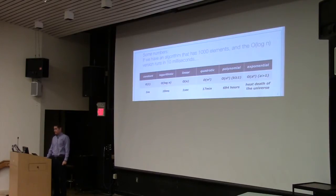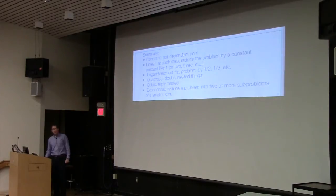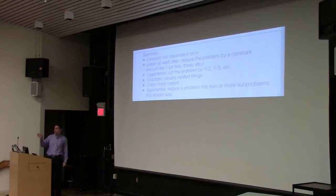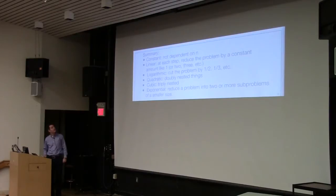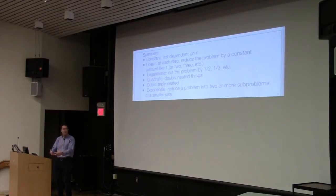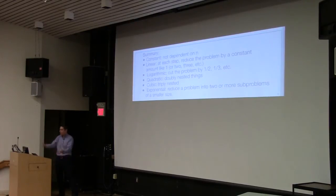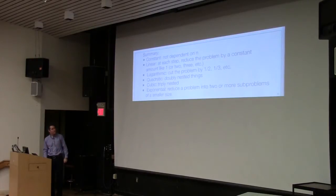Summary: constant behavior we love. Linear — at each step you reduce the problem by one. Logarithmic — you cut the problem in half. Quadratic — doubly nested. Cubic — triply nested. And exponential — you reduce the overall problem but the subproblems are actually bigger, which is not what you want.